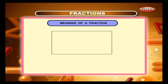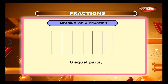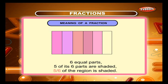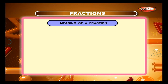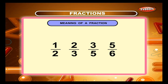In figure 4, which is again a rectangle, there are six equal parts, out of which five parts are shaded. That is, five-sixths of the region is shaded. The numbers like 1/2, 2/3, 3/5, 5/6 are called fractional numbers. The numerals or fractional names used to name fractional numbers are called fractions.